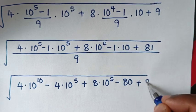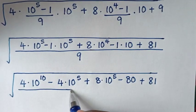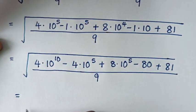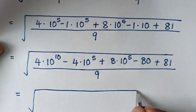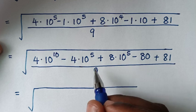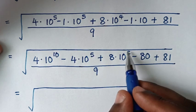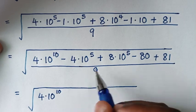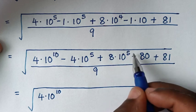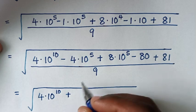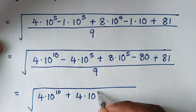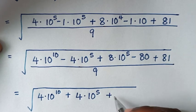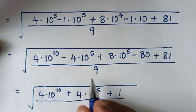Then plus 81 over 9. In the next step, combining: minus 4 times 10 to the power of 5 and plus 8 times 10 to the power of 5 cancel partially, and 81 minus 80 equals 1, so we get plus 1. All over 9.